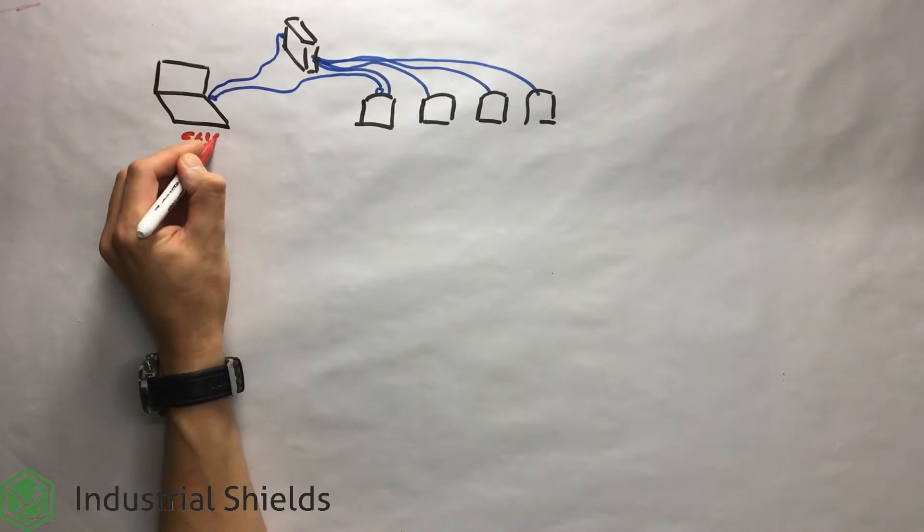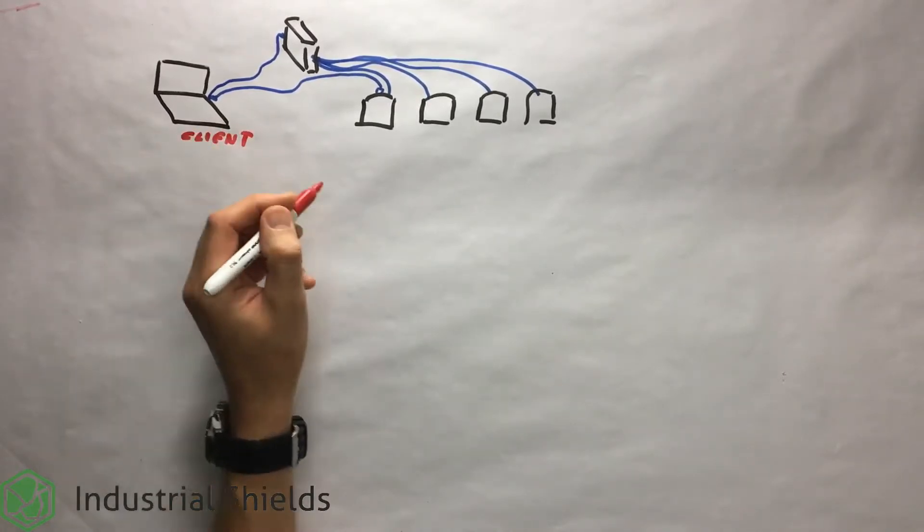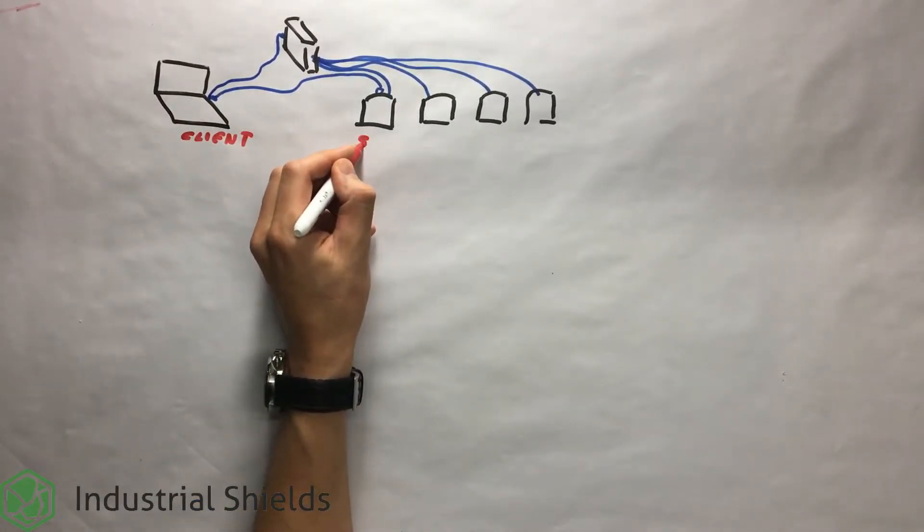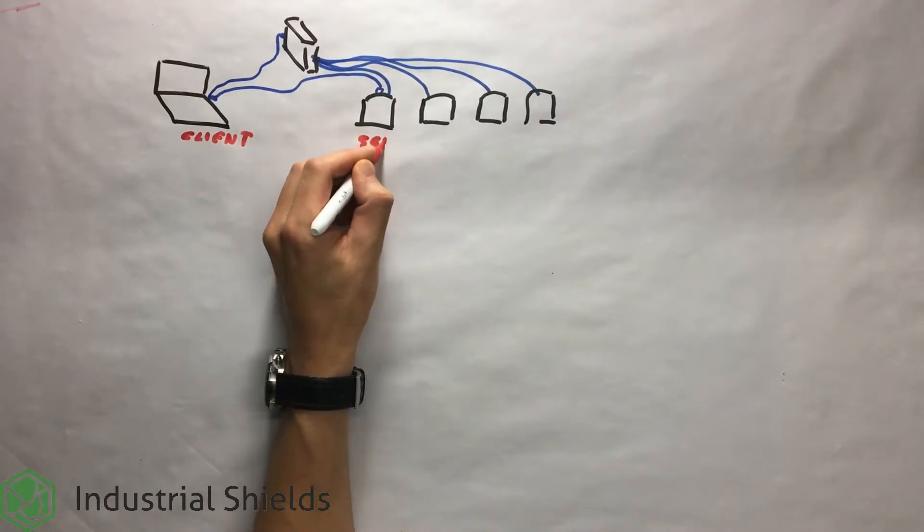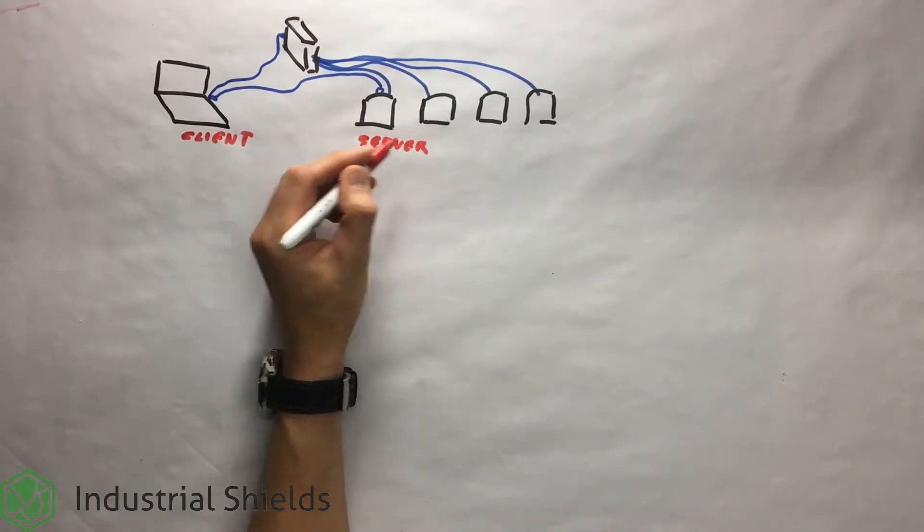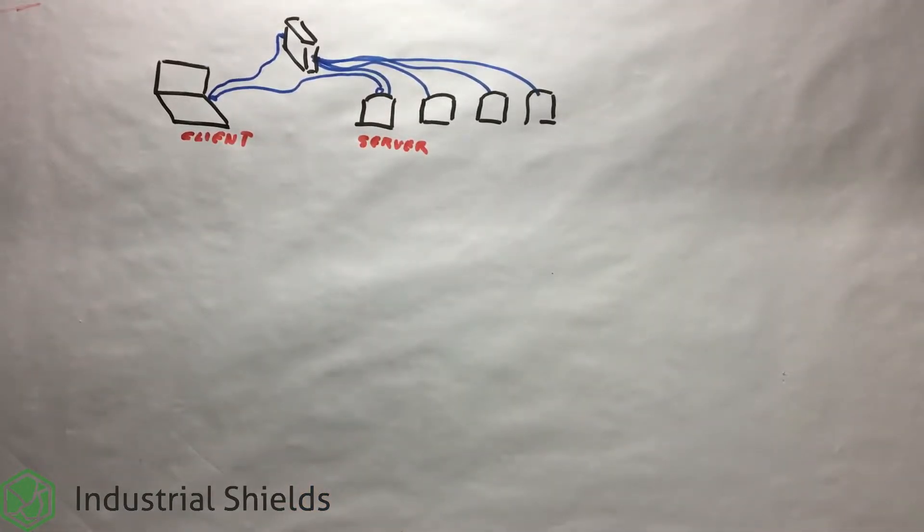When the main computer wants to send some type of data, it must start the connection with the PLC as a client function. This structure only makes sense if the main computer manages the uses of the controller.